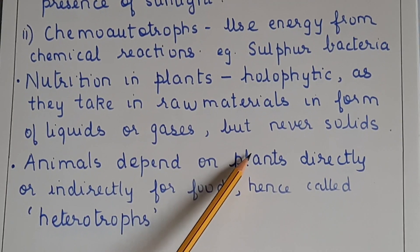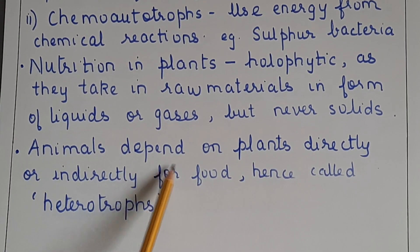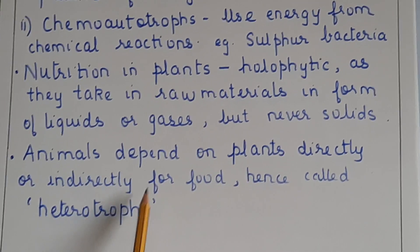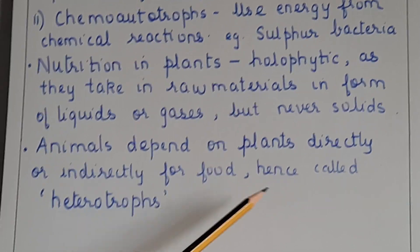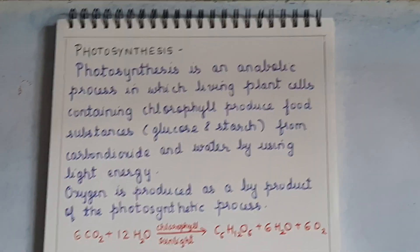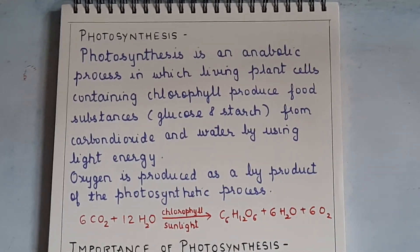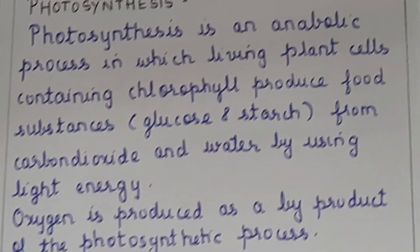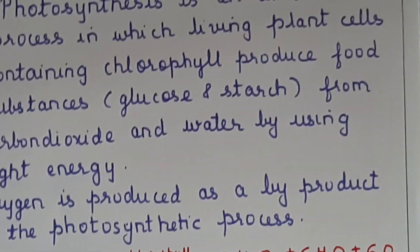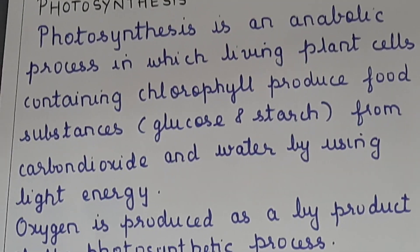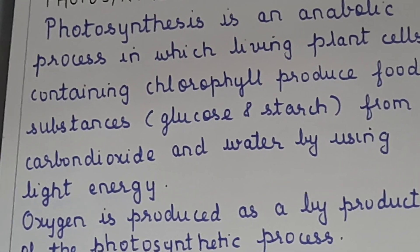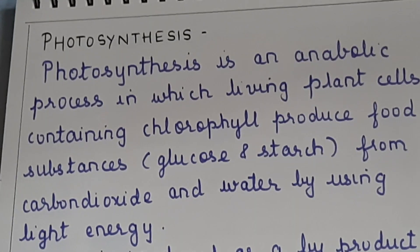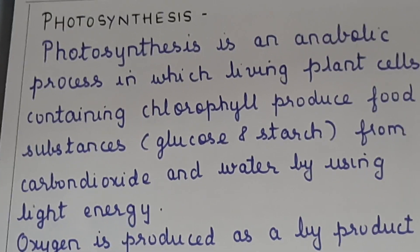Animals depend on plants directly or indirectly for their food, hence they are called as heterotrophs. Photosynthesis is an anabolic process in which living plant cells containing chlorophyll produce food substances — that is glucose and starch — using carbon dioxide and water in presence of light energy. The definition of photosynthesis is very important.